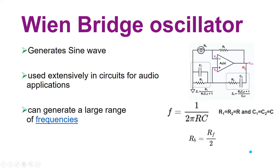On the other hand, the output is also fed back through impedance Z2 and impedance Z1, and the voltage in between is felt at the positive pin — therefore it is called positive feedback. The network consists of R2, C2, C1, and R1.